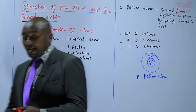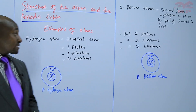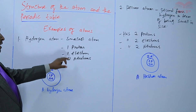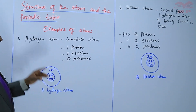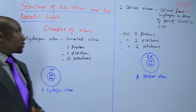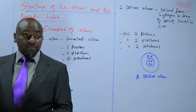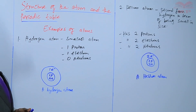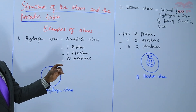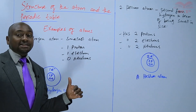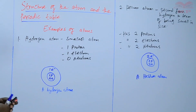Those two are examples of the smallest atoms: hydrogen and helium. Hydrogen has one proton, one electron, and no neutrons. For helium, two protons, two electrons, and two neutrons. Now I want us to introduce something else. Besides the protons, electrons, and neutrons plus their charges, we also want to find out what is the mass — the relative mass.